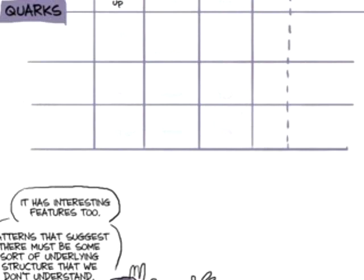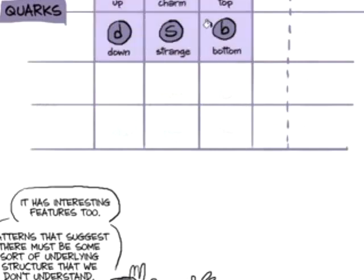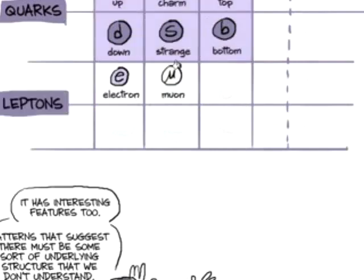There's six quarks: up, down, charm, strange, top, bottom. These guys we call leptons. These are just names. There's electron, muon, tau.